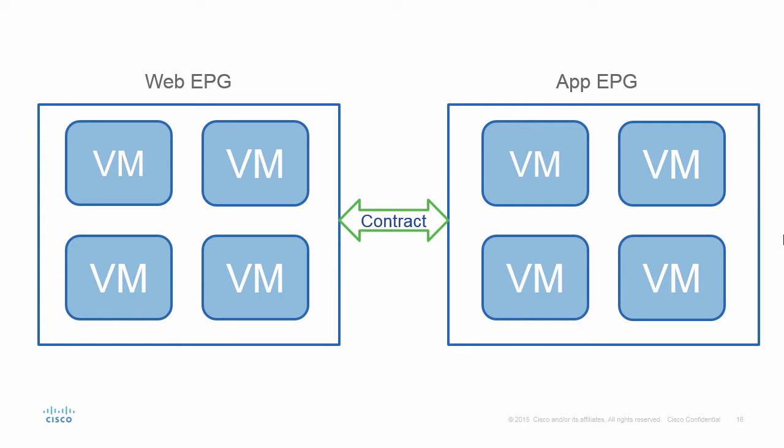The contract allows the VMs in the web endpoint group and the app endpoint group to communicate — maybe it's a contract that allows HTTP, HTTPS, SSH, or whatever protocol you're using.